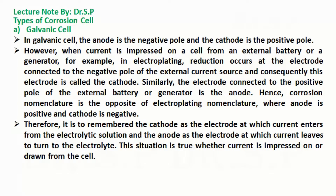Hence, corrosion nomenclature is the opposite of electroplating nomenclature, where the anode is positive and the cathode is negative. Therefore, it is useful to remember the cathode as the electrode at which current enters from the electrolytic solution, and the anode as the electrode at which current leaves to return to the electrolyte. This is true whether current is impressed on or drawn from the cell.